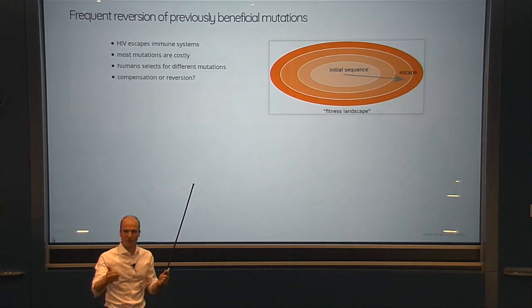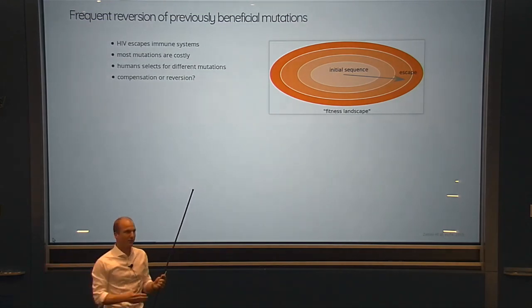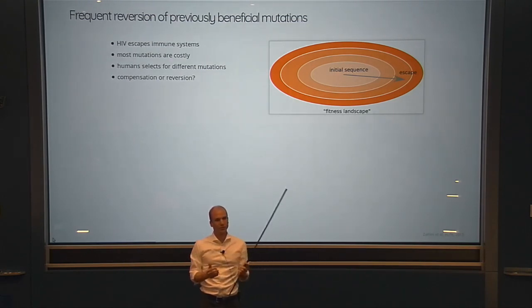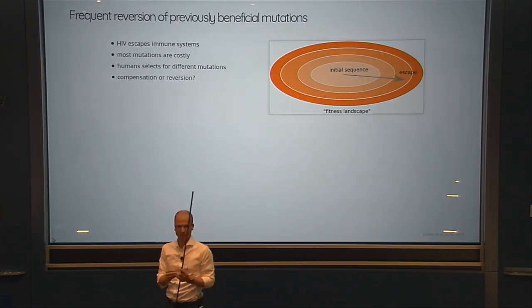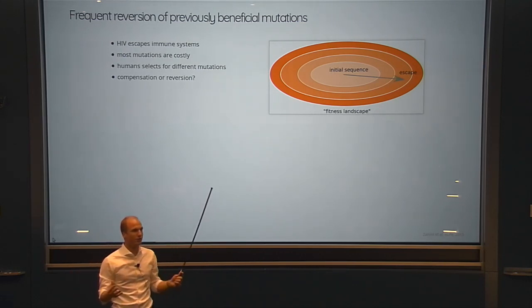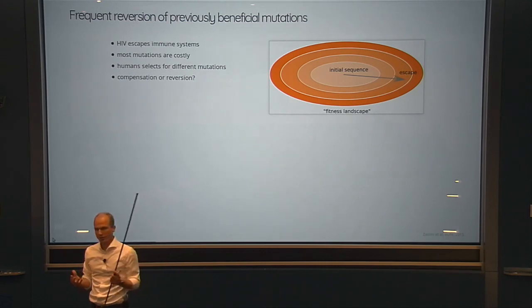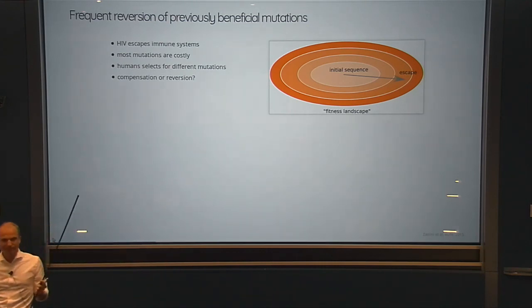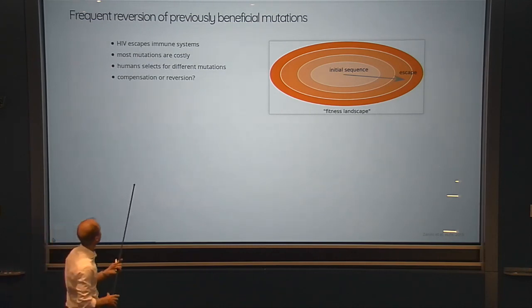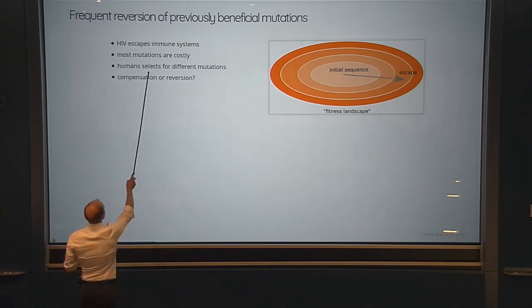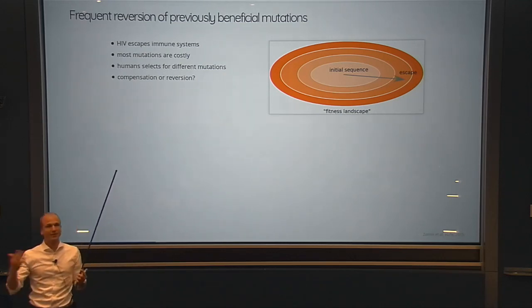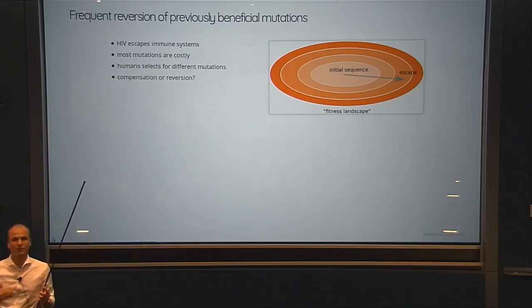The virus is transmitted from one individual to the next, so it needs to accumulate different mutations in every individual. But most of these mutations will actually hurt the virus — most will reduce the functioning of the proteins that make up the virus, because you can't just mess with proteins in arbitrary ways. The question then arises: as different humans select for different mutations, how does the virus maintain integrity of these proteins over a long time?